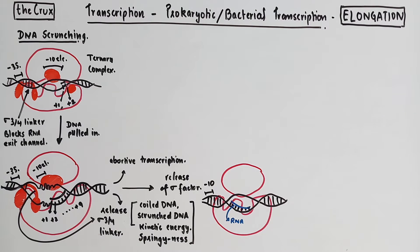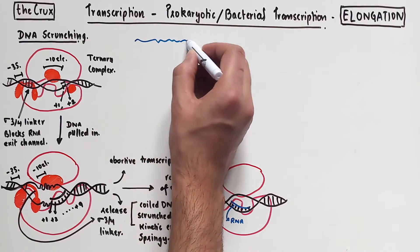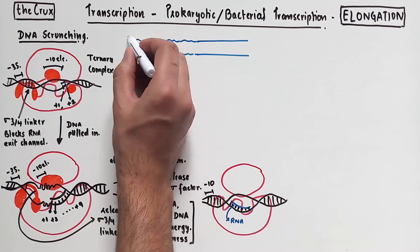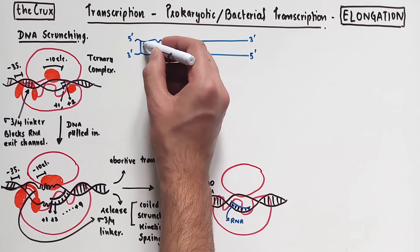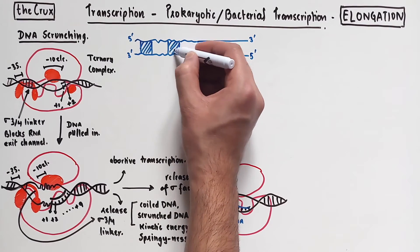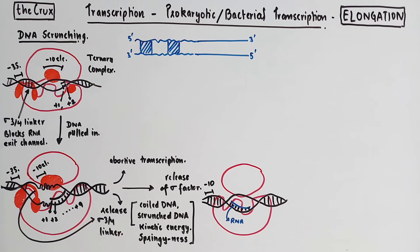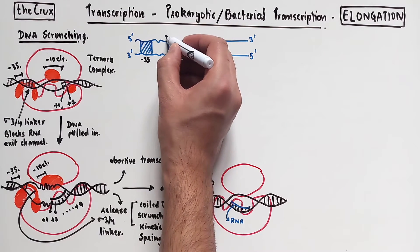The polymerase transitions into a configuration where you have a normal transcription bubble, but the negative 10 element is now pushed out from behind. This process also results in a stable RNA-DNA hybrid, where the RNA is usually longer than 10 nucleotides. Now, there are a few notations that I would like to clarify before we proceed. This is more of a technical insight, but these are some terminologies that you may come across frequently.